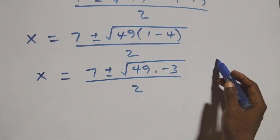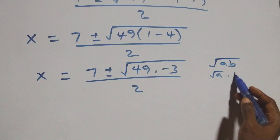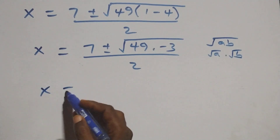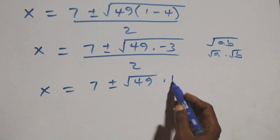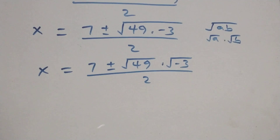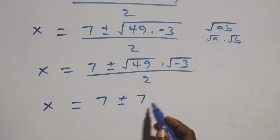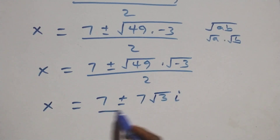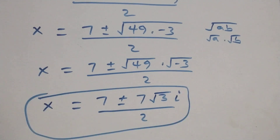Now we have root(a × b) which we can separate as root(a) times root(b). So here we have x equals to 7 plus or minus root(49) times root(minus 3), all over 2. At this point we have two complex solutions.